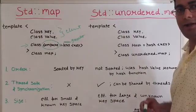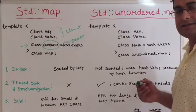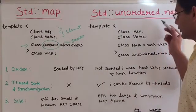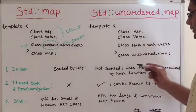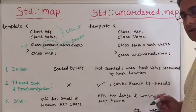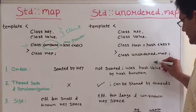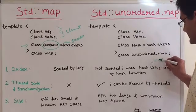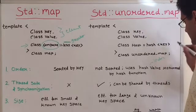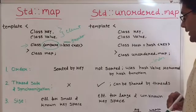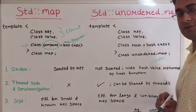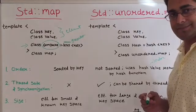On the other hand, elements in unordered map are not sorted. It uses a hash value as an index, written by a hash function, to organize its elements.